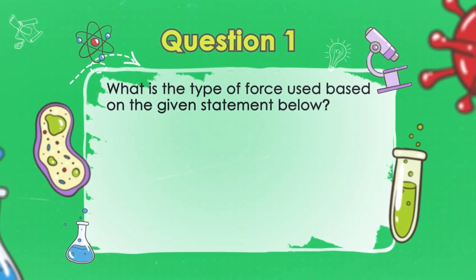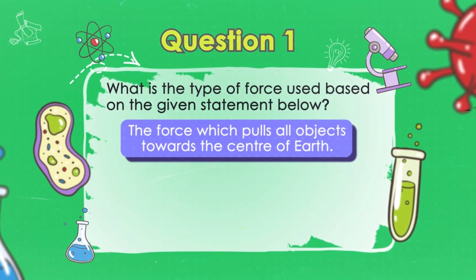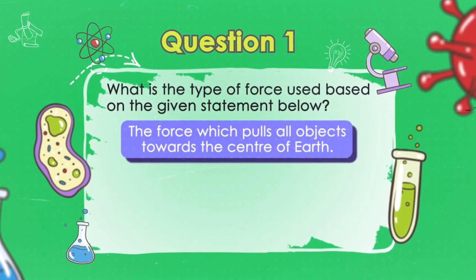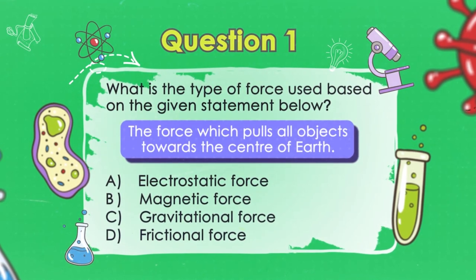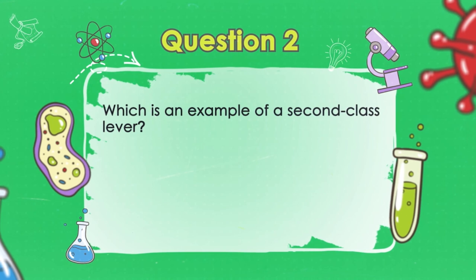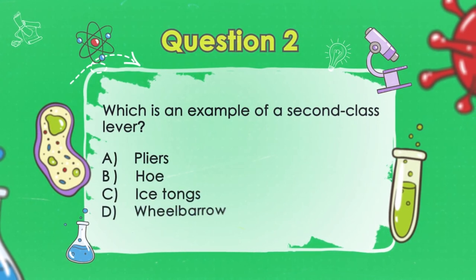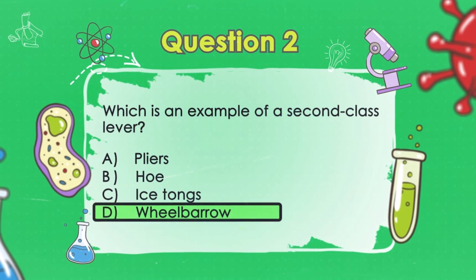Let's recall what you have learned by answering some questions. Are you ready? Question one: what is the type of force used based on the given statement — the force which pulls all objects towards the center of Earth? Please think carefully. You are correct! The answer is C, gravitational force. Question two: which is an example of a second-class lever? Very good! The answer is D, a wheelbarrow.